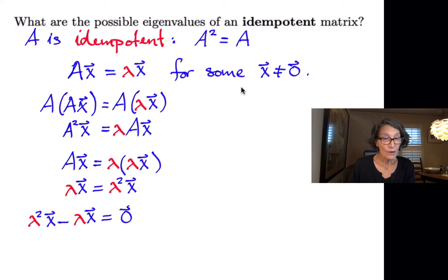And now on the left side, I can factor the vector X out, and I can call that lambda squared minus lambda times the vector X using properties of scalar multiplication of matrices.